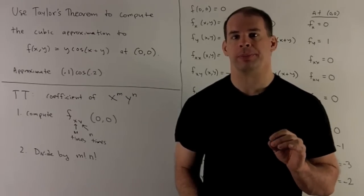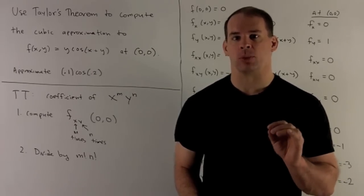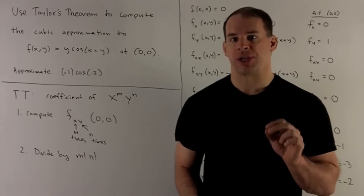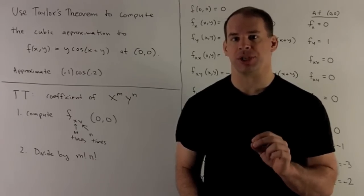Use Taylor's Theorem to compute the cubic approximation to f(x,y) = y*cos(x+y) at the point (0,0).